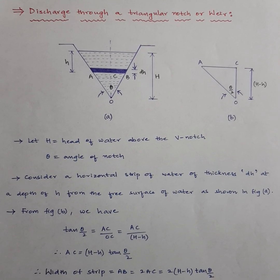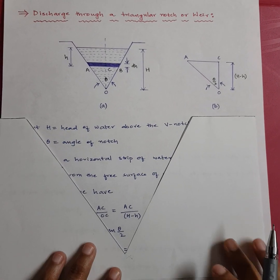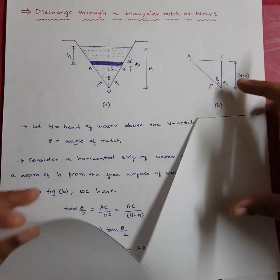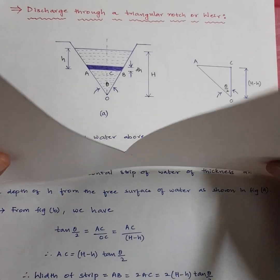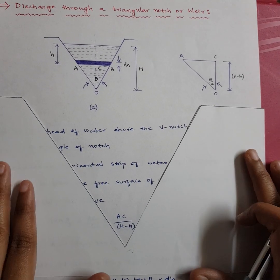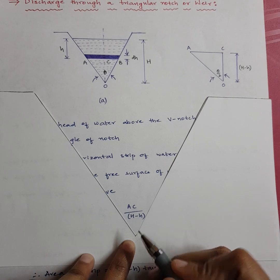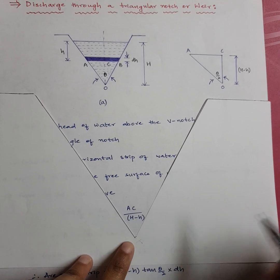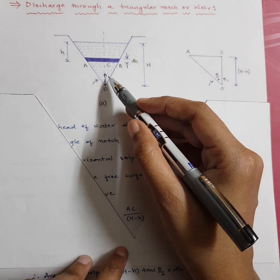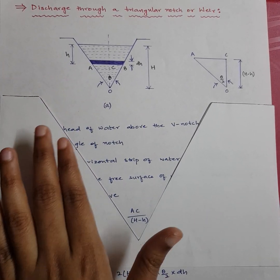You can see in the figure a triangular notch — this is the V-notch. This is how a V-notch looks, and it is generally placed at the end of an open channel. The bottommost point of the V is called the apex point, and the angle at that point is called the apex angle, denoted as theta.